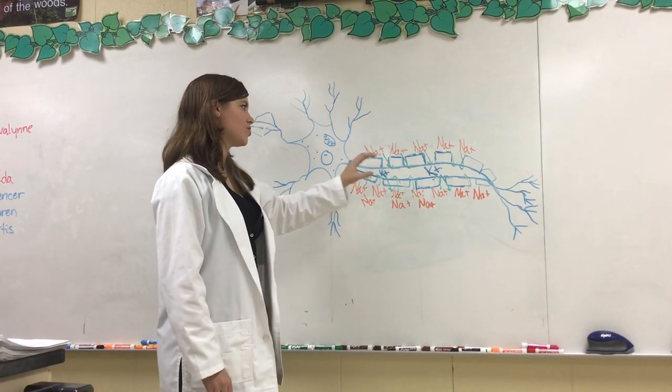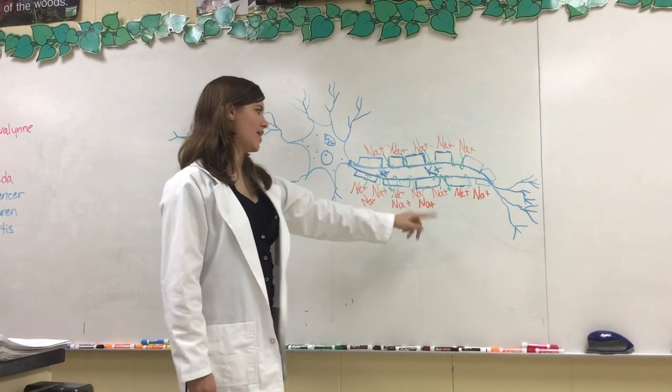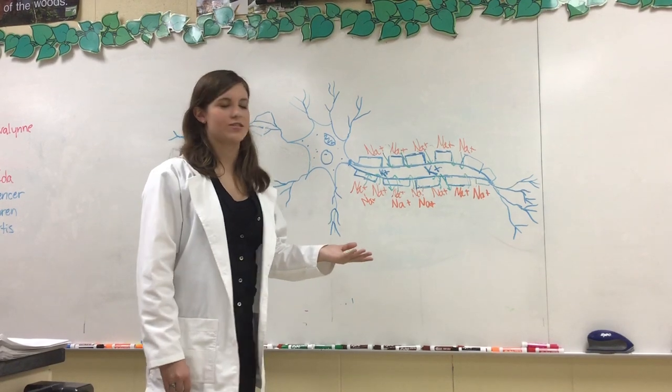As soon as those sodium gates close, potassium gates are going to open, allowing potassium to move outside of the cell. Now, we're kind of at the opposite spot of where we started.